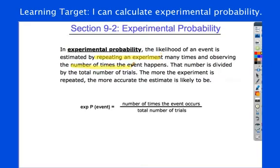I'm going to highlight this, the number of times the event happens. So really what are we basing this on? We're basing this on, based on past results.